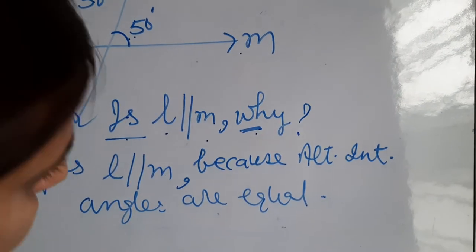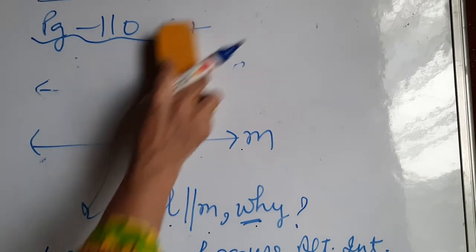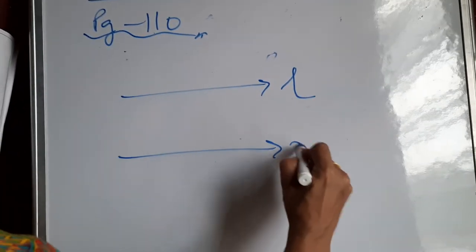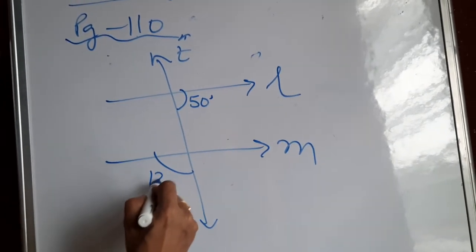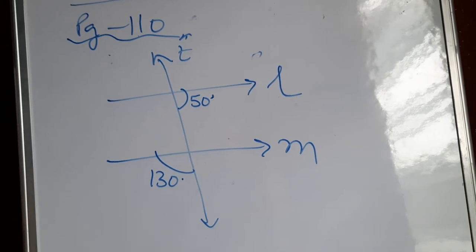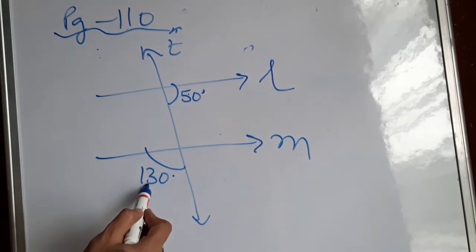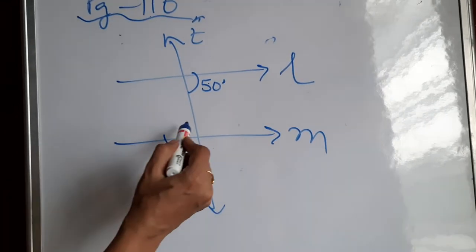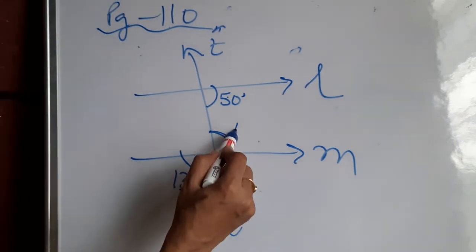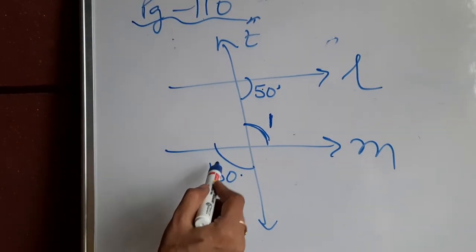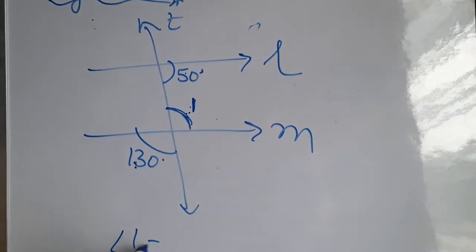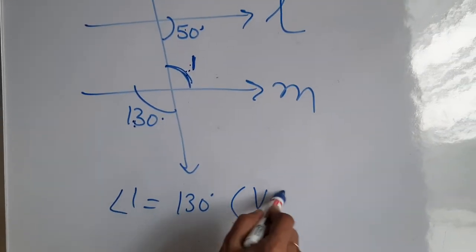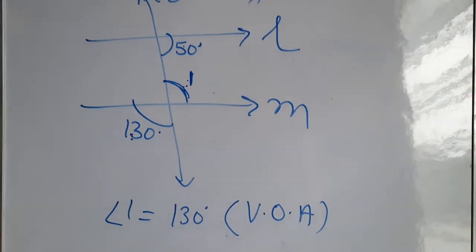Now the second part: a figure is given where one angle is 50, another is 130, and another is 30. One angle is interior and one is exterior. I will name an angle as angle 1. Angle 1 and 130 are vertically opposite angles, and vertically opposite angles are always equal, so angle 1 equals 130 degrees.